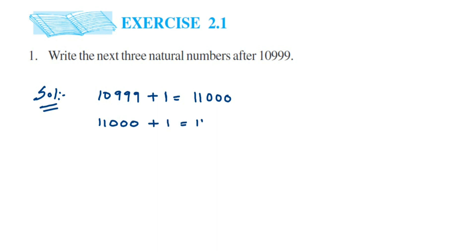Now to this 11,001, I'll add one more number because we want three numbers. It will become 11,002. So 11,000, 11,001, and 11,002 will be the three next natural numbers after 10,999.